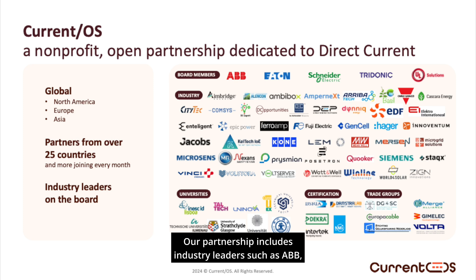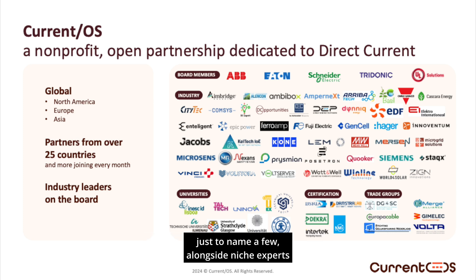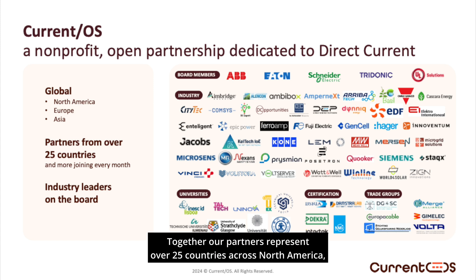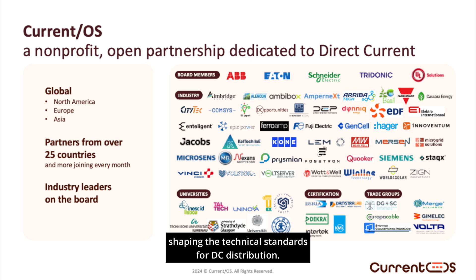Our partnership includes industry leaders such as ABB, Eaton, Schneider Electric, Tridonic, UL Solutions, Siemens, and Kohn, just to name a few, alongside niche experts and innovative startups. Together, our partners represent over 25 countries across North America, Europe, and Asia, with more joining every month. Current OS partners actively participate in working groups, shaping the technical standards for DC distribution.